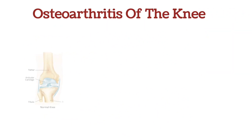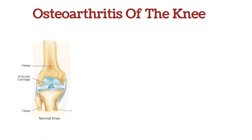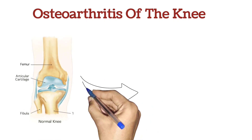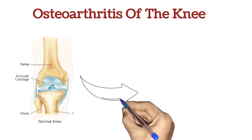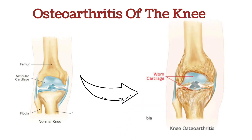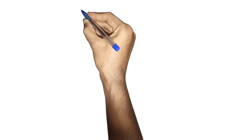Definition: Osteoarthritis is a degenerative condition characterized by the deterioration of articular cartilage and the formation of osteophytes — new bone growth within the joints. Unlike inflammatory arthritis, it is primarily caused by wear and tear changes that occur with age, especially in weight-bearing joints.